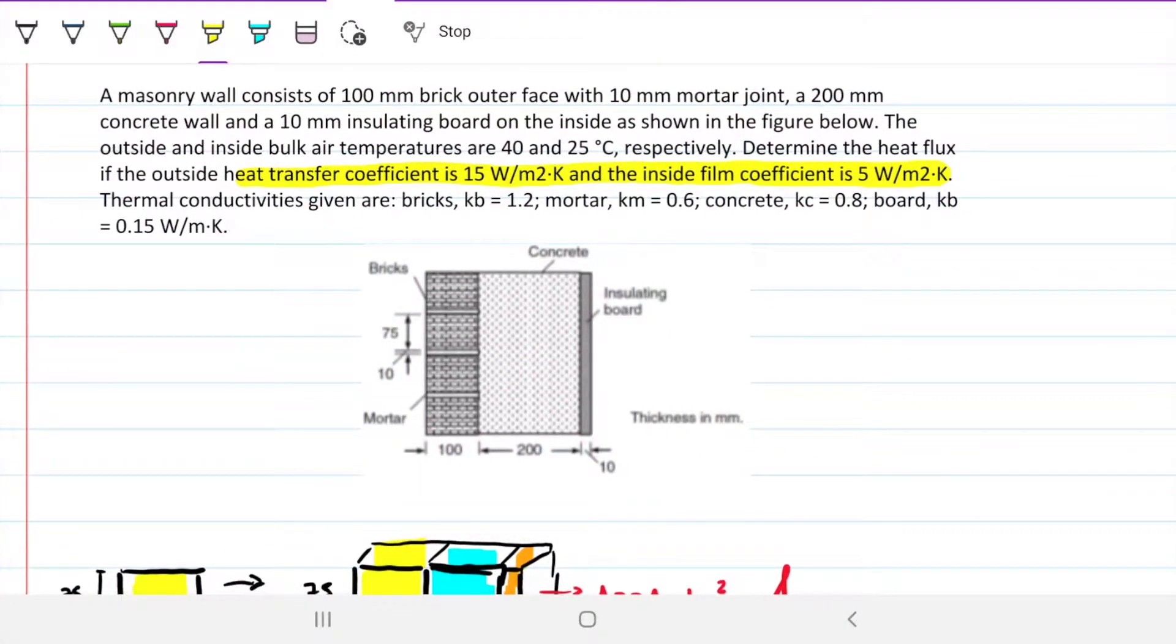The problem statement reads: a masonry wall consists of 100 mm brick outer face with 10 mm mortar joints, 200 mm concrete wall and a 10 mm insulating board on the inside as shown in the figure. The outside and inside bulk temperatures are 40 and 25 degrees Celsius respectively. Determine the heat flux if the outside heat transfer coefficient is 15 and the inside film coefficient is 5 watts per meter squared kelvin.